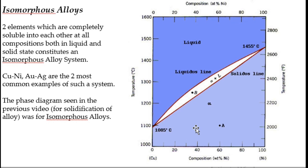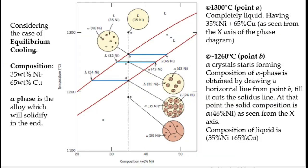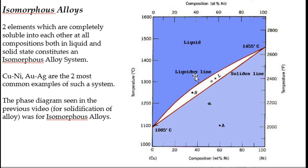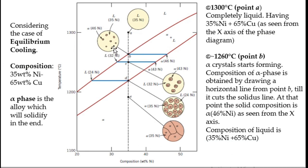We will understand when we see the eutectic system why this diagram represents complete solubility. For the isomorphous alloy system we will consider two cases: equilibrium cooling and non-equilibrium cooling. We have taken a particular portion of the phase diagram to study in detail.